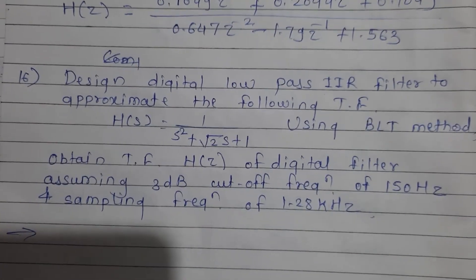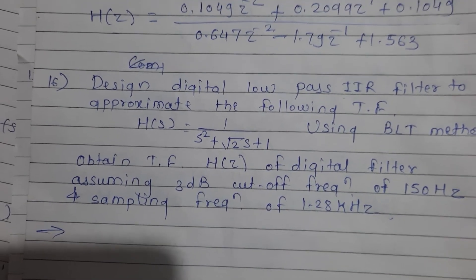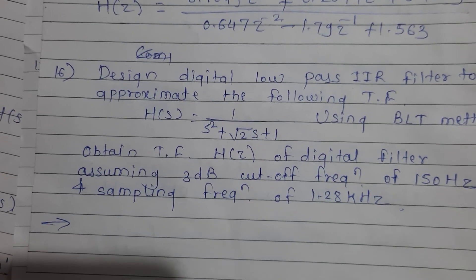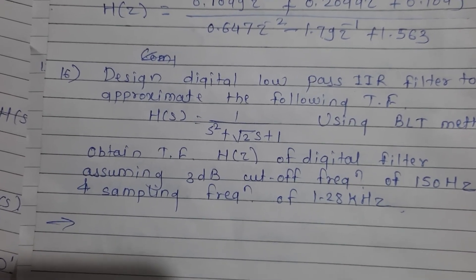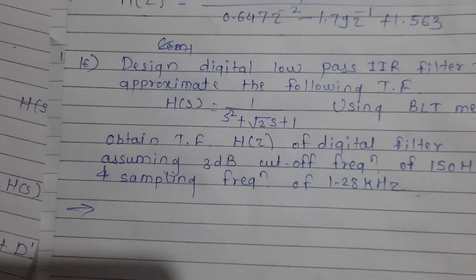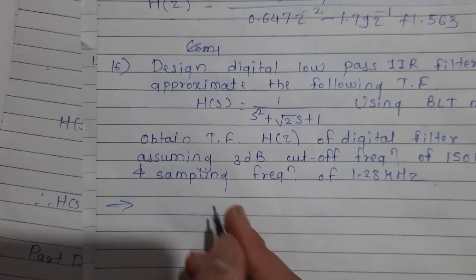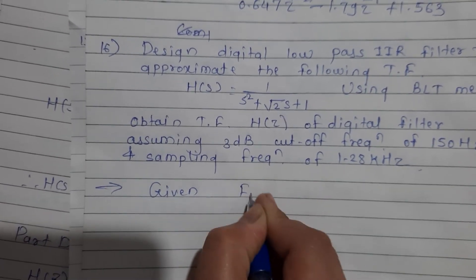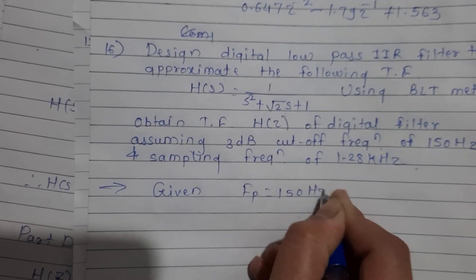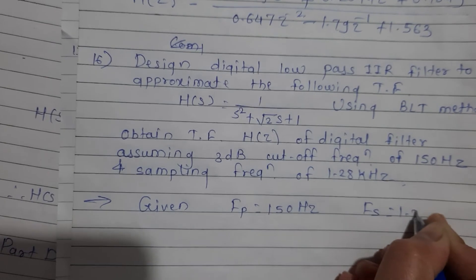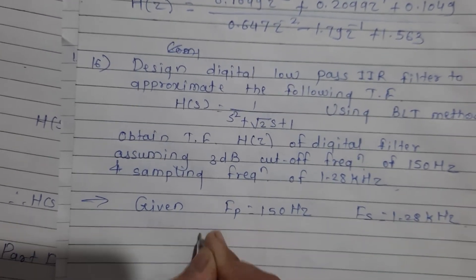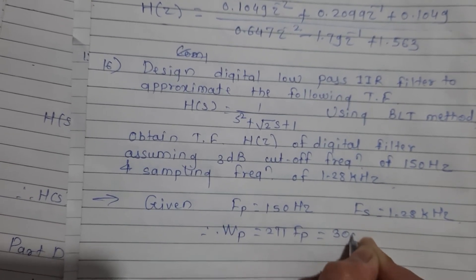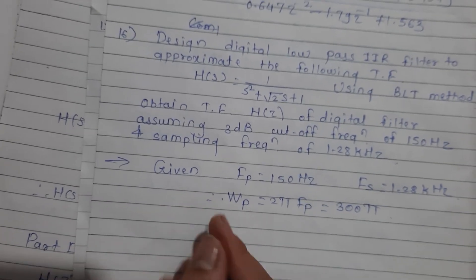Design a digital low-pass IIR filter to approximate the transfer function H(s) equals 1 divided by (s squared plus square root of 2 times s plus 1) using the BLT method. Obtain the transfer function H(z) of the digital filter assuming a 3 dB cutoff frequency of 150 Hz and sampling frequency of 1.28 kHz. The analog cutoff angular frequency Omega_p equals 2 pi times f_p, which gives 300 pi radians per second.